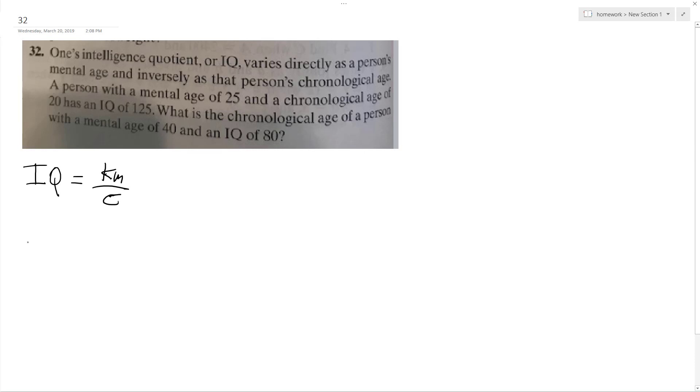For one person, we've got an IQ of 125 equals K, which is our unknown, and then our mental age is 25 and our chronological age is 20.